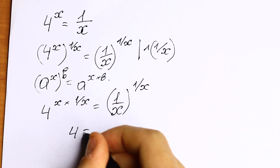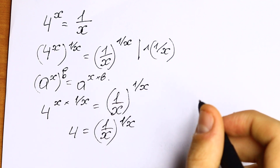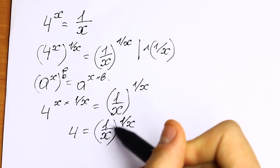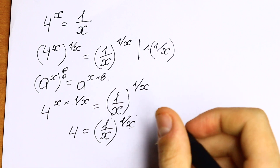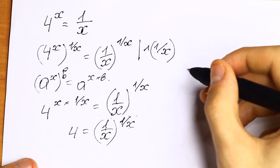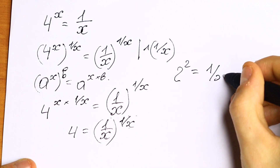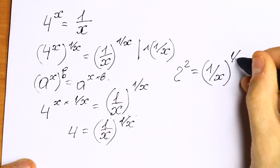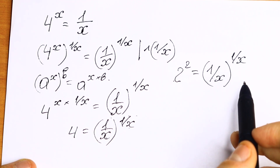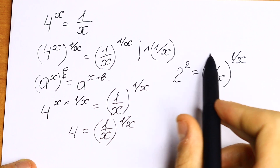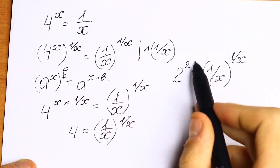And we will have 4 equal to 1 over x to the power 1 over x. Take a look — on the right we have the same base and the same exponent. On the left we have some number. But this 4 is a really good number because we can write 4 as 2 squared, and it will be equal to 1 over x to the power 1 over x. As you can see, we have the same base and the same exponent on both sides.